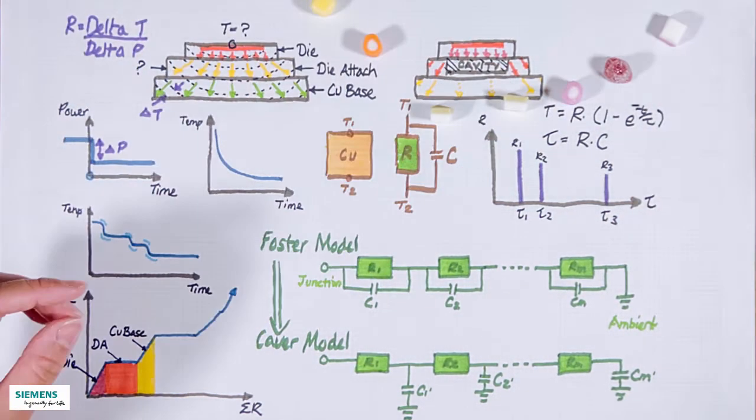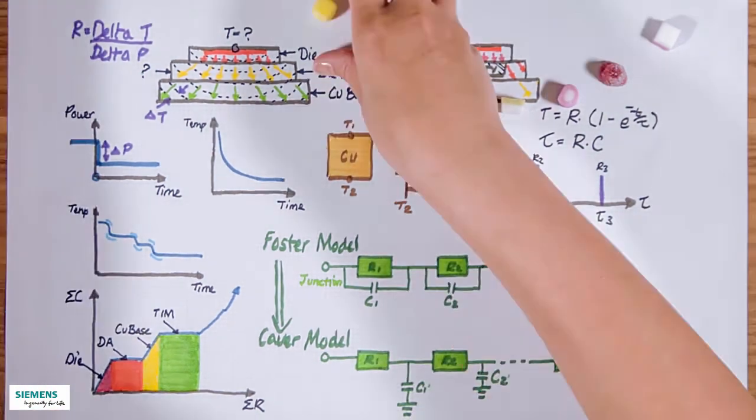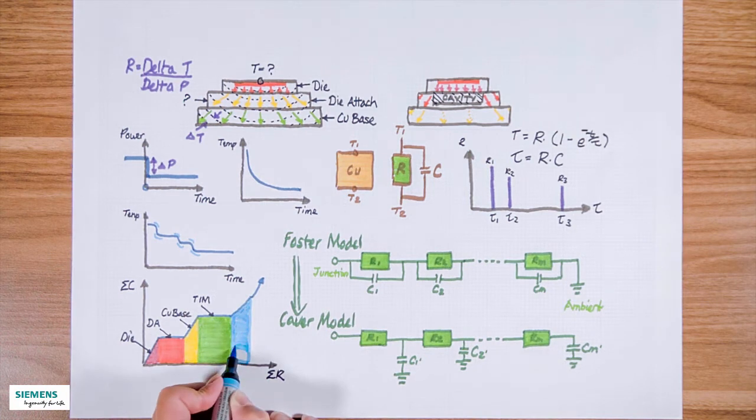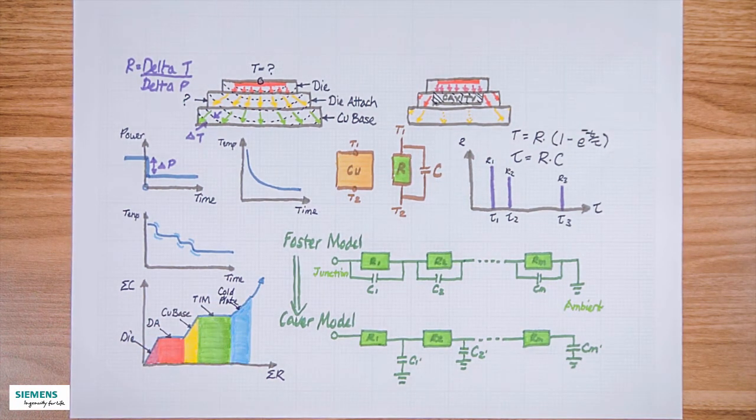If there is additional thermal interface material after, the curve will flatten out, then go steep again as you hit a cold plate, then the whole thing will cool down and go into infinite capacitance. If something goes wrong, for example if the grease is bad, it will show up with a longer curve like this, and the function will go to the infinity further along. Or if the die attaches wrong, then this curve will be longer, and again shifts the functions further along the graph.